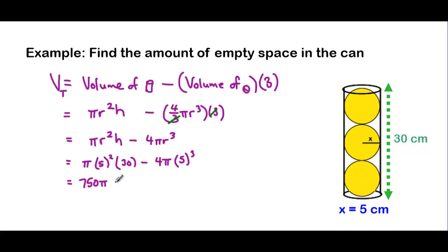I'll just leave the π symbol there for now. Subtract 4 times π times 5³. 5³ is 125. And 125 times 4 is 500. So 500 times π.